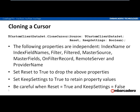You clone a cursor by calling the CloneCursor method on the cursor you want to point to an existing client data set's delta and data, specifying that data set in the first parameter. The second parameter, reset, indicates whether the clone should adopt the properties that are otherwise independent between the clone and the original — including index name, index field names, filter, filtered, master source, master fields, on-filter record, remote server, and provider name. If you set reset to true, those values are not adopted from the cursor being cloned.